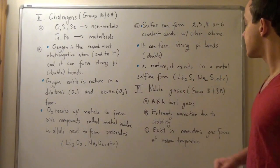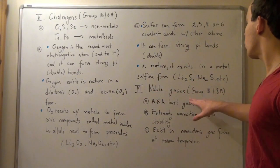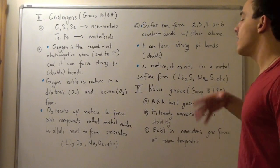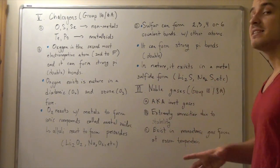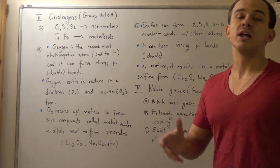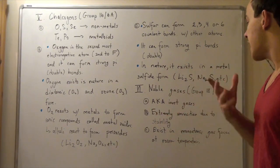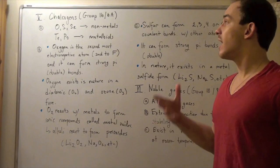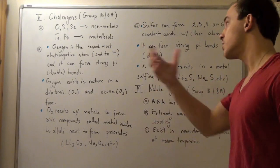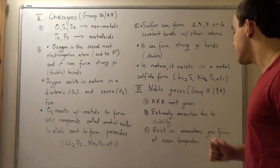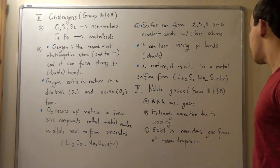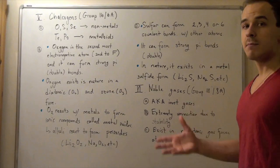Let's look at our noble gases. Noble gases are group 18 or 8A, and they're also known as the inert gases. These elements are extremely stable and therefore very unreactive. They exist, unlike most other atoms—for example, oxygen, nitrogen, and hydrogen—as monatomic gases at room temperature.